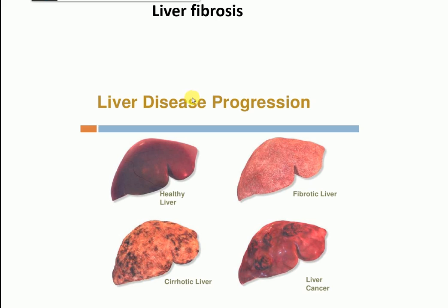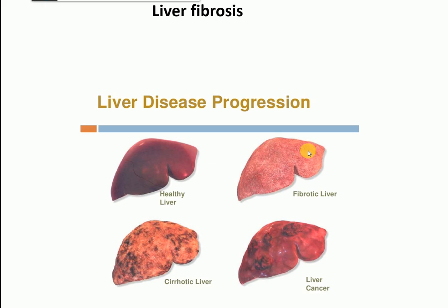I will give you the definition of liver fibrosis, but first let's compare these pictures. A healthy liver gets converted into a fibrotic liver. After fibrosis, the liver becomes more sick and progresses to the next stage - a cirrhotic liver - and finally that leads to liver cancer, called hepatocellular carcinoma. This big picture compares the healthy liver with different pathological conditions: fibrotic, cirrhotic, and cancerous.